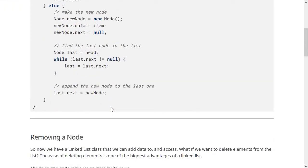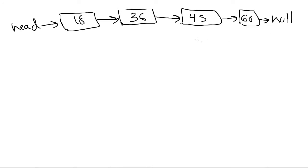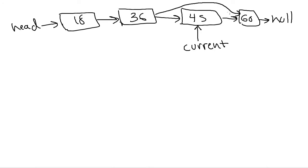Now let's talk about removing an item from the linked list by value. If we want to remove node 45, we have to loop through the list to find it. But to actually remove it, we need to track not just the current node but also the node before it — because we need to change the previous node's next field to bypass the one being removed.